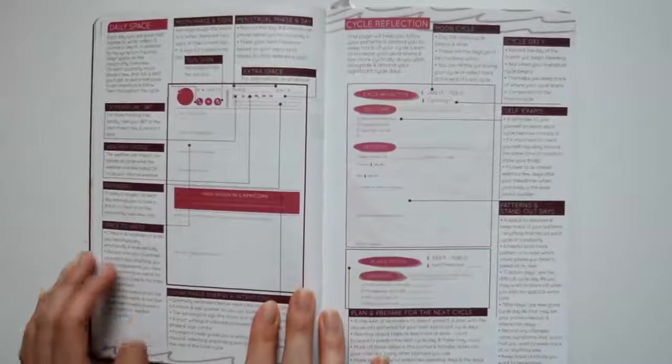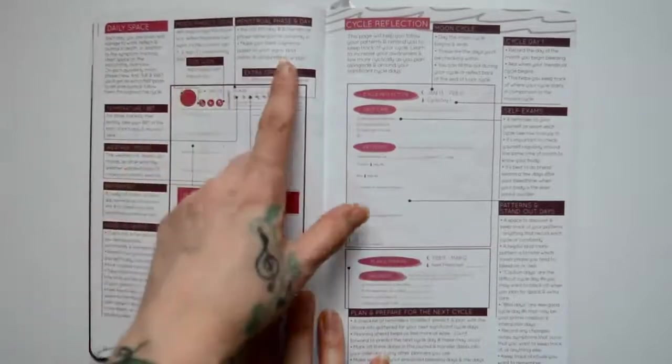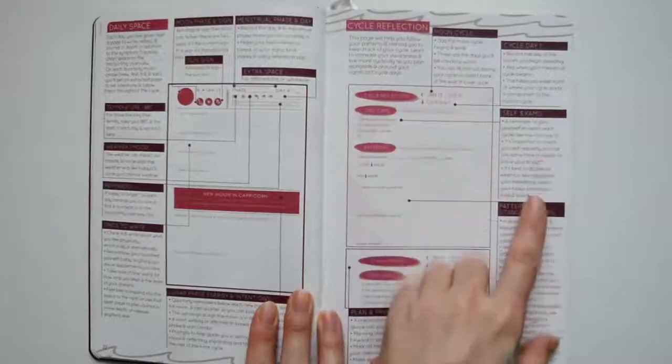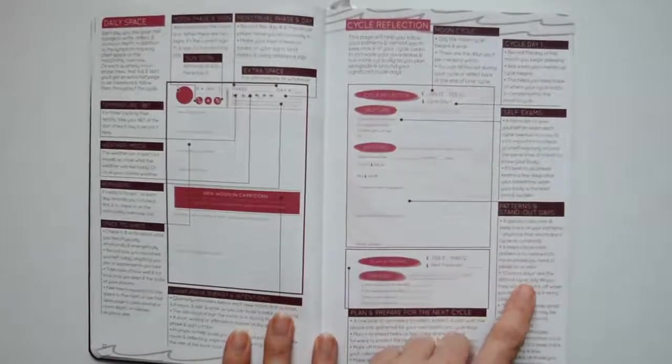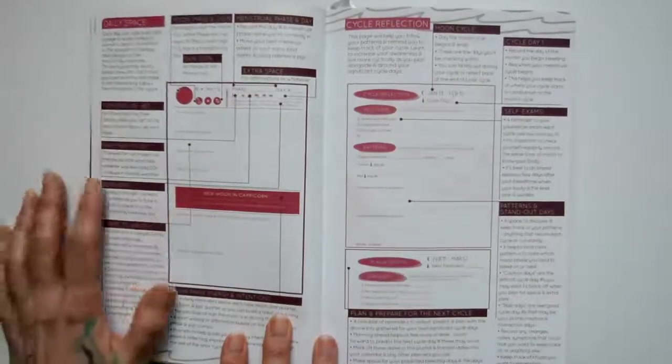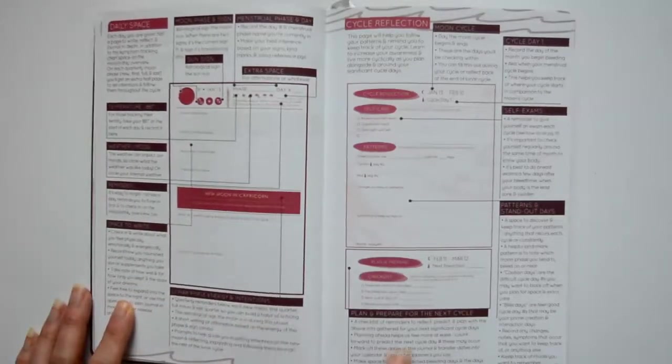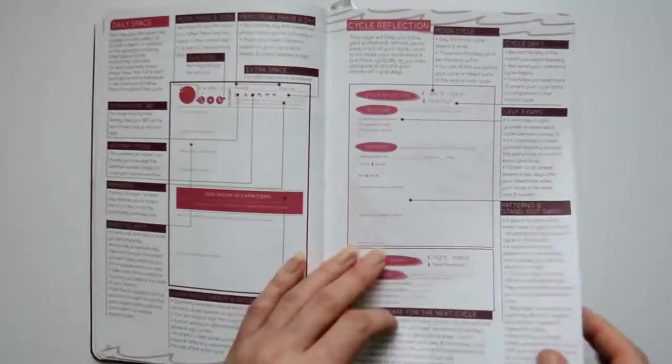Here's the daily space pages. There's the moon phase, menstrual phase, cycle reflection, moon cycle, cycle day one, self-exams, patterns and standout days, temperature, weather and mood, reminders, space to write, lunar phase energy and intentions, planning and preparing for the next cycle.